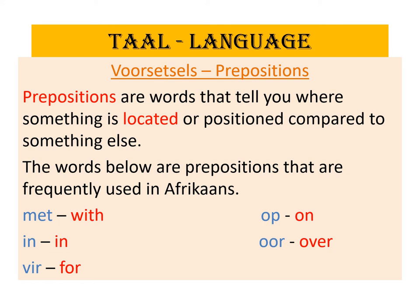Our last and final section for TAL this term are Voorsetsels. Voorsetsels are prepositions. Prepositions are words that tell you where something is located or positioned compared to something else. The words below are prepositions that are frequently used in Afrikaans.